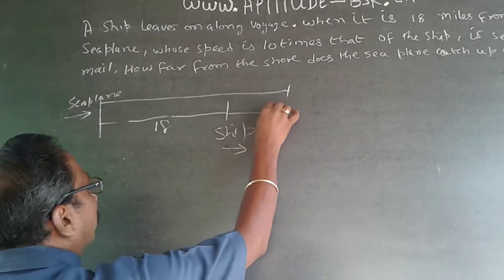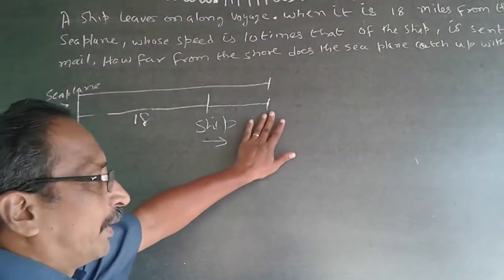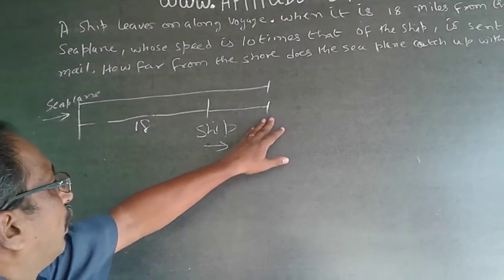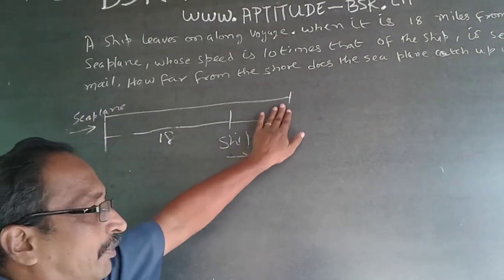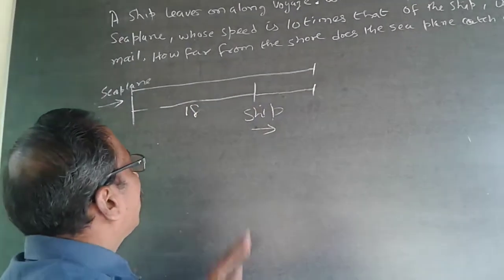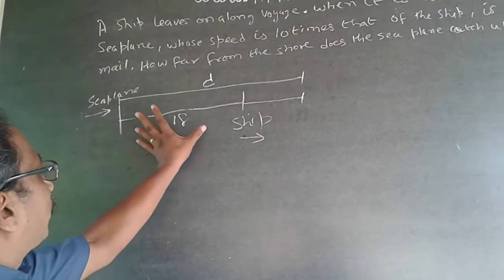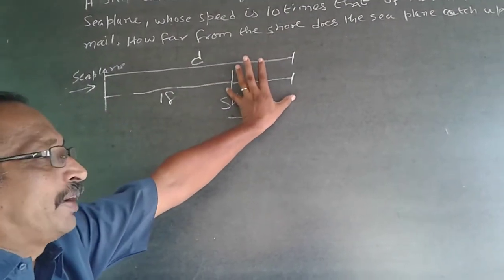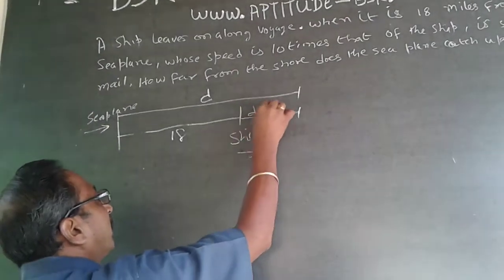The ship is also moving forward, so the seaplane will catch the ship somewhere ahead. We are only concerned about the distance traveled by the seaplane — let this be D. Since the gap is already 18 miles, the distance traveled by the ship from that point will be D minus 18.